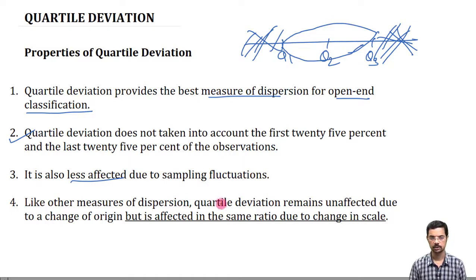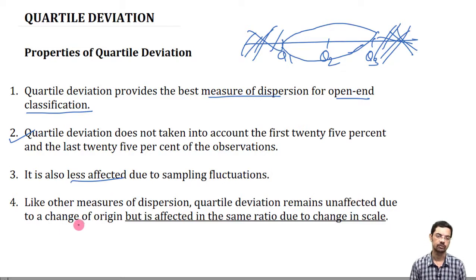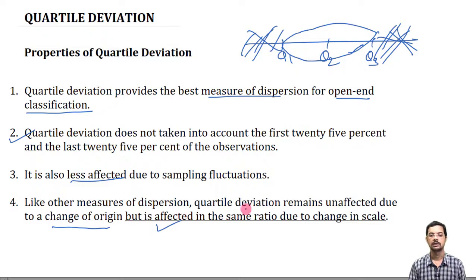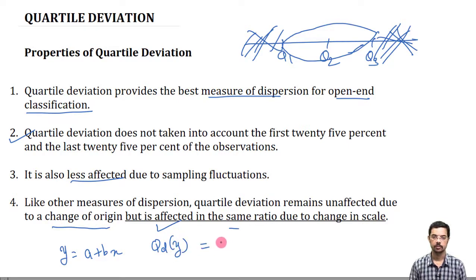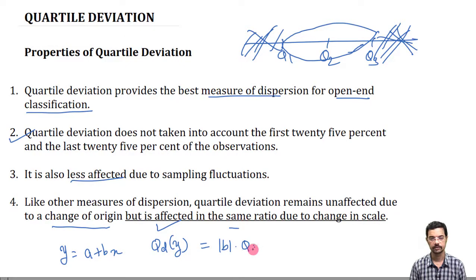Like other measures of dispersion, quartile deviation will remain unaffected due to change of origin, but it is affected by change in scale in the same ratio. That is, if y = a + bx, then the quartile deviation of y = |b| × quartile deviation of x.